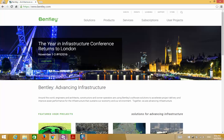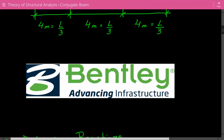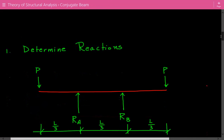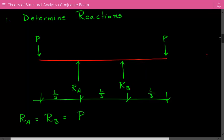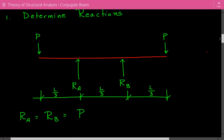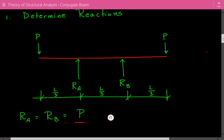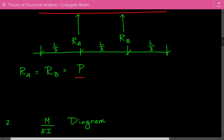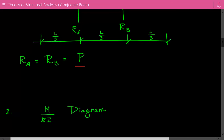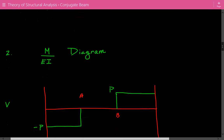Going back to our conjugate beam problem, the first thing we're going to do is determine the reactions at supports A and B. Since this is a symmetrical loading scenario, the reaction at A equals the reaction at B, and that's equal to P — the concentrated load acting at each end of the beam. Next, we'll construct the M/EI diagram and the shear diagram, starting with the shear.